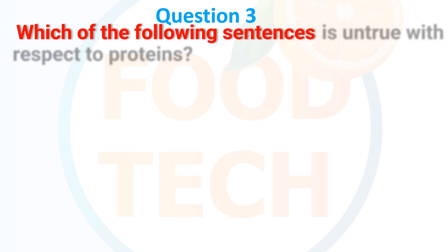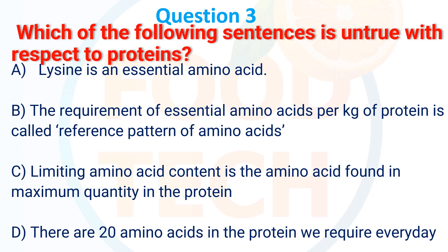Question 3. Which of the following statement is unproved with respect to protein? A. Lysine is an essential amino acid. B. The requirement of essential amino acid per kg of protein is called the reference pattern of amino acid. C. Limiting amino acid content is the amino acid found in maximum quantity in protein. D. There are 20 amino acids in protein we require every day. The answer is C: limiting amino acid content is the amino acid found in maximum quantity in protein.